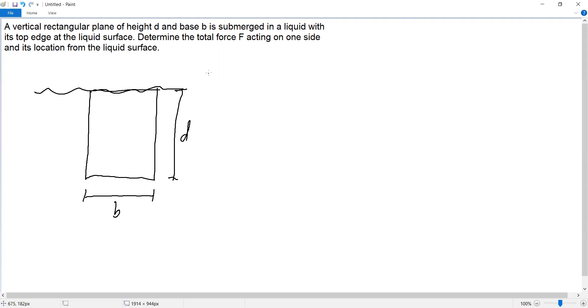So the question is determine the total force acting on one side and its location from the liquid surface. Okay, so here is the centroid of this rectangle, at the center. The height from the liquid surface, let's call this h bar.